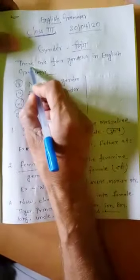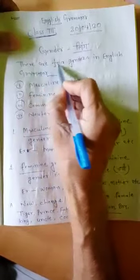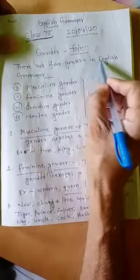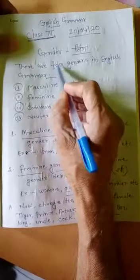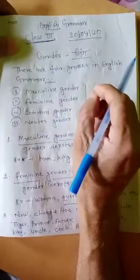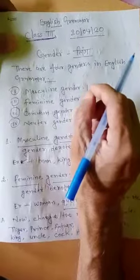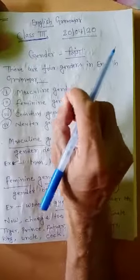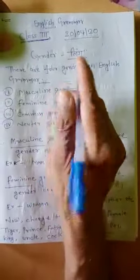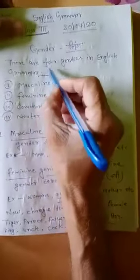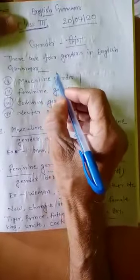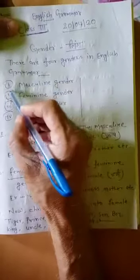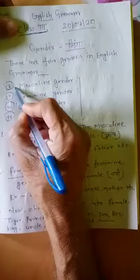There are four genders in English Grammar. First,